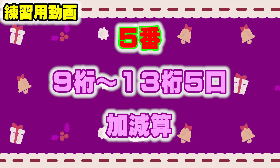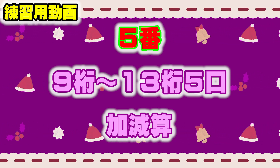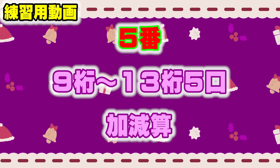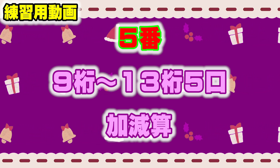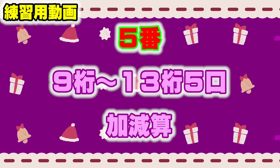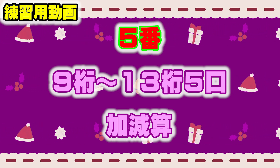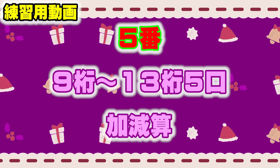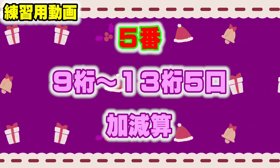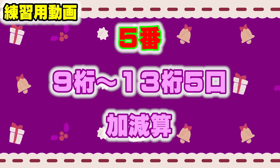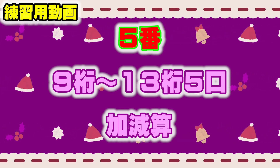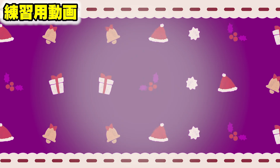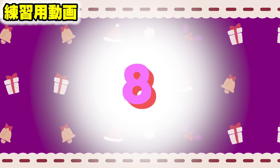問題5: 9桁から13桁、極値、加減算の問題です。Start with 534,261,980,780, 263,914,753, minus 5,296,087,141, minus 78,462,305,964, and 2,075,139,819,406. 5番の回答欄に答えを書いてください。(Please write your answer in the answer column for question 5.)